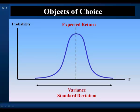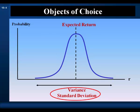A risky asset is described by two measures: expected return and variance or standard deviation. These two measures allow us to differentiate between all risky investments and make a rational choice between two risky investments — they are objects of choice. We prefer more to less, so we choose the risky asset with the highest expected return, everything else equal. We're risk-averse, so we choose the risky asset with the lowest standard deviation, everything else equal.